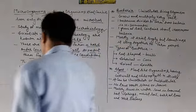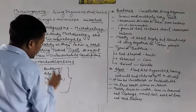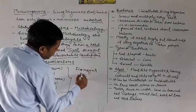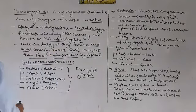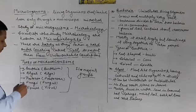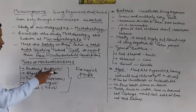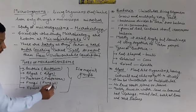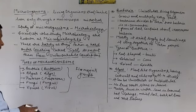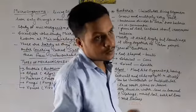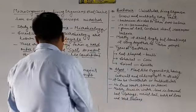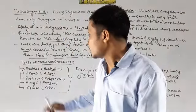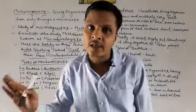Now let's talk about the types of microorganisms. They are divided into five major groups. The five groups are: bacteria (singular: bacterium), algae (singular: alga), protozoa (singular: protozoan), fungi (singular: fungus), and viruses (singular: virus). We will study each of these in this chapter, one by one.